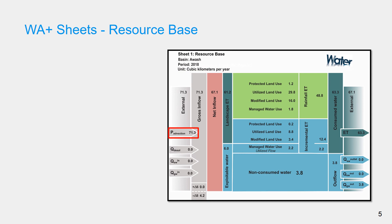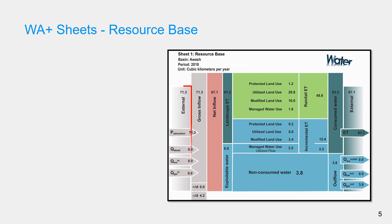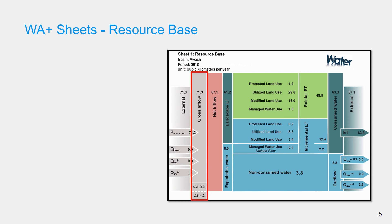Inflows to the basin: precipitation is the main inflow component. A river basin could also have inflows from desalination, water brought from other basins artificially through basin transfer, and groundwater inflow from other basins, since the groundwater basin could be different from the surface boundary of a river basin. The sum of all these inflows gives the external inflow to the basin. Water may also be abstracted or added to storage within the basin, so the gross inflow is the sum of external inflow and the change in storage.